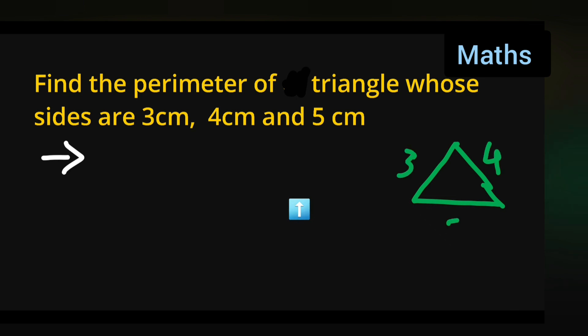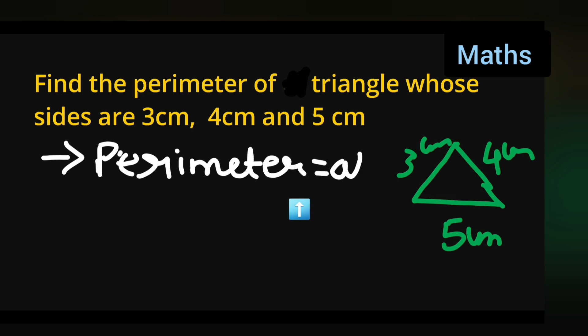Okay, so I can write down perimeter is equal to all sides of triangle.